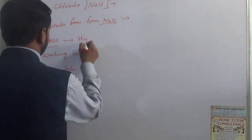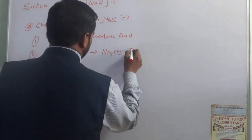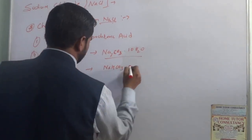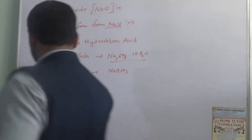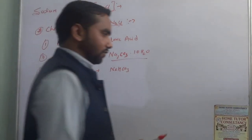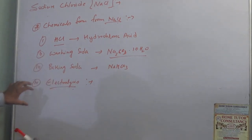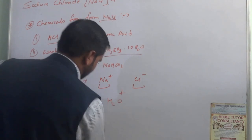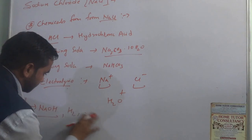When we perform electrolysis of NaCl — dissolving it in water and passing electric current — the bonds break and it splits into Na⁺ and Cl⁻ ions, which then react with water. The products formed are sodium hydroxide (NaOH), hydrogen gas (H2), and chlorine gas (Cl2). These are the chemicals formed from NaCl when it is electrolyzed.